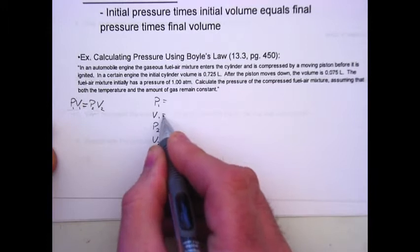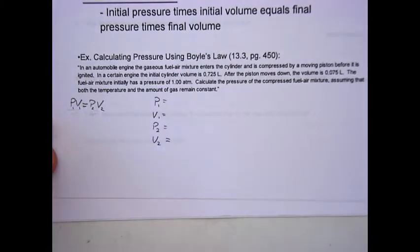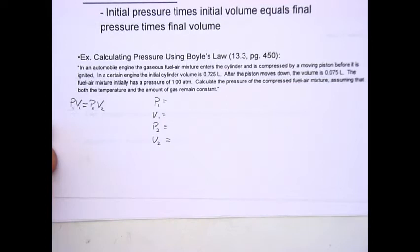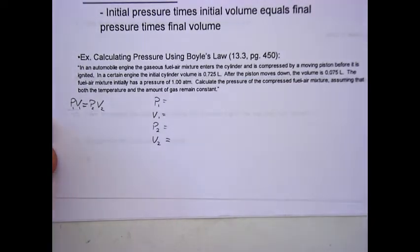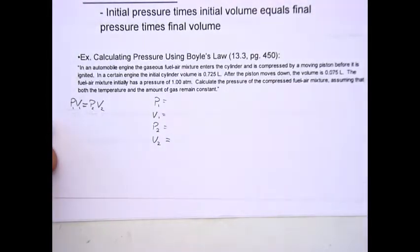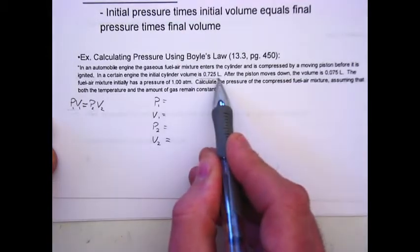Since this is a word problem, we have to go through and figure out which one goes with which. The question reads, in an automobile engine, the gaseous fuel-air mixture enters a cylinder and is compressed by a moving piston before it is ignited. In a certain engine, the initial cylinder volume is 0.725 liters.